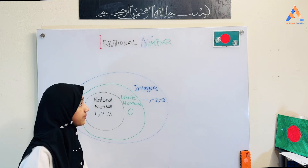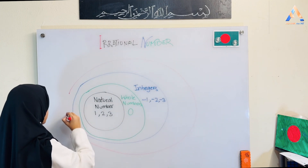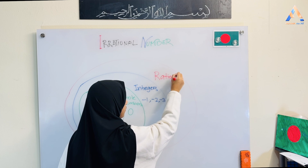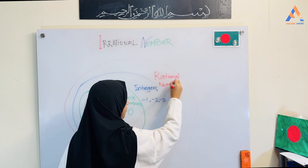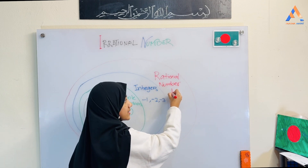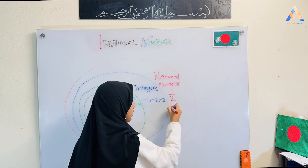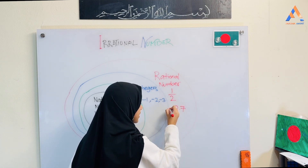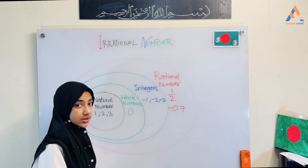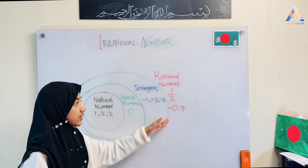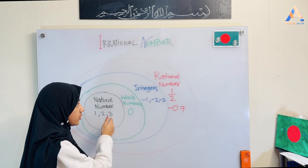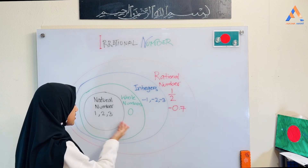A rational number includes not only the integer numbers and natural numbers, but also fractions like one-half, or decimals like 0.7. So a rational number includes anything with fractions and decimals, and also all of these: natural numbers such as 1, 2, 3; whole numbers such as 0, 1, 2, 3; and integers such as negative 1, negative 2, negative 3, 0, 1, 2, 3.